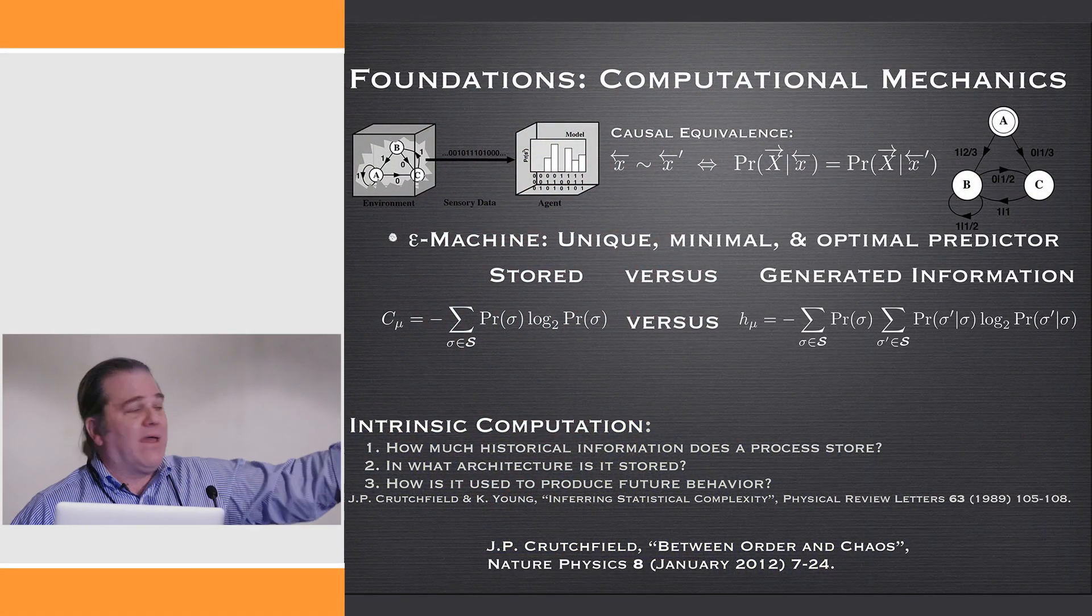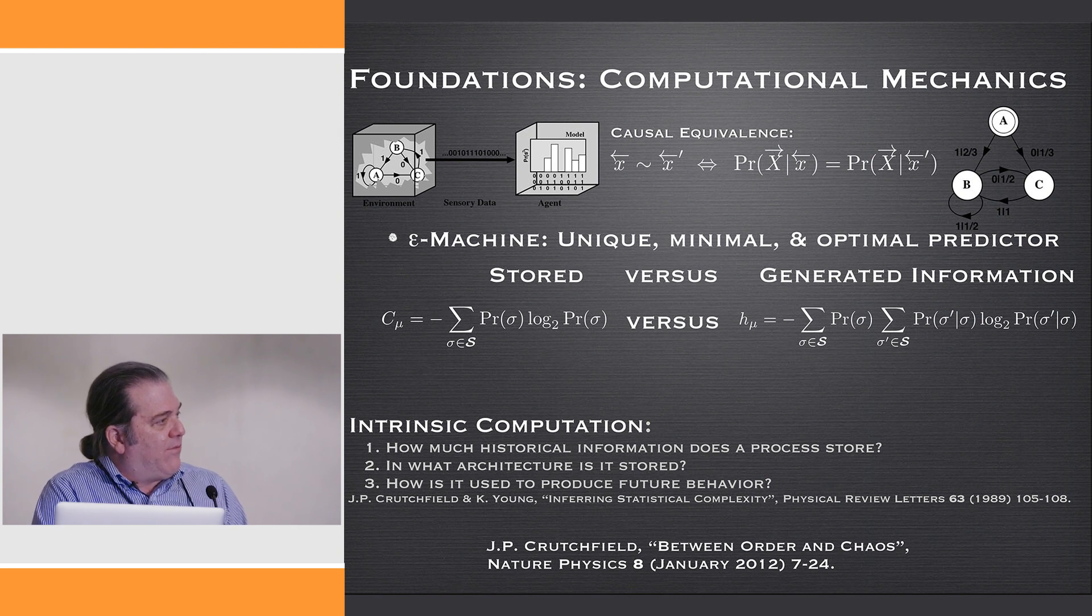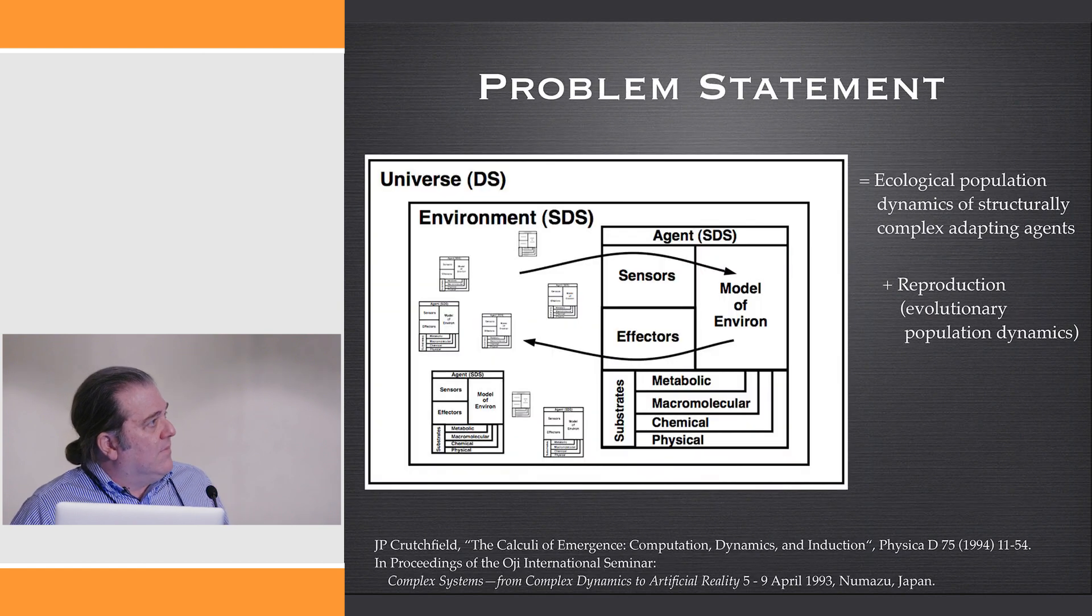There's this amalgam of a little bit of determinism and predictability with sudden stochasticity that makes them complex. They store the most historical information as they produce their behavior. So then you can come back and actually answer these questions of intrinsic computation. How much historical information does a process store? That's the statistical complexity. What's the architecture that stores it? That's the set of causal states and the transition dynamic over it. How is it used to produce future behavior? Well, one measure of that is this information production rate, the entropy rate.